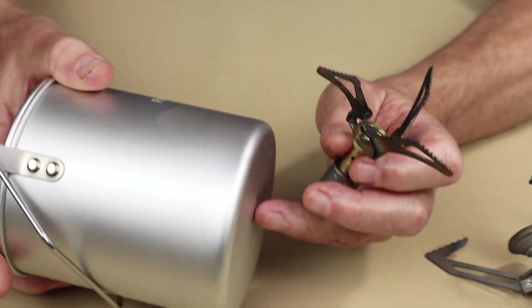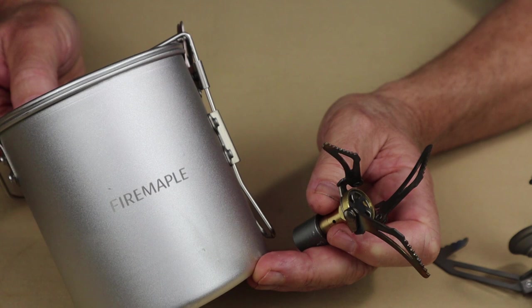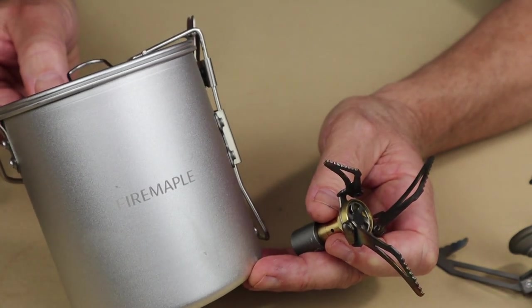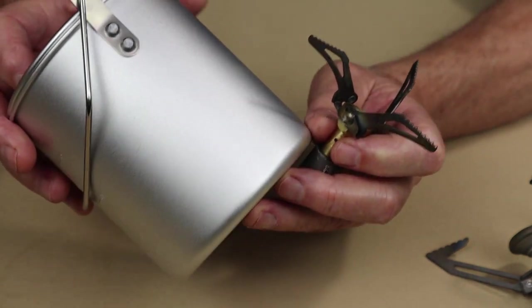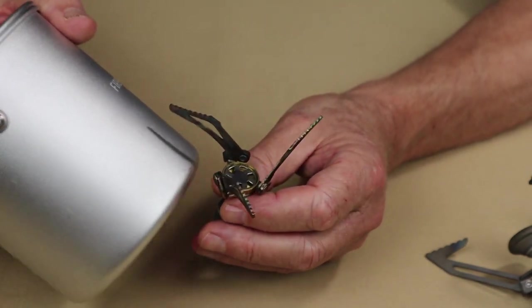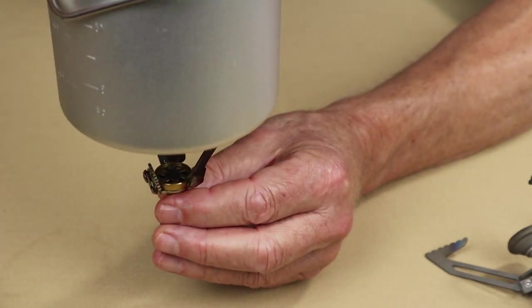I'm going to show you the pot I used for both of those tests. This is the Fire Maple Frost 900 milliliter pot. It's an anodized aluminum pot, and I have a review on this as well. But it was a good pot to match up with the two of these. As you can see, it sits on the Bulin.